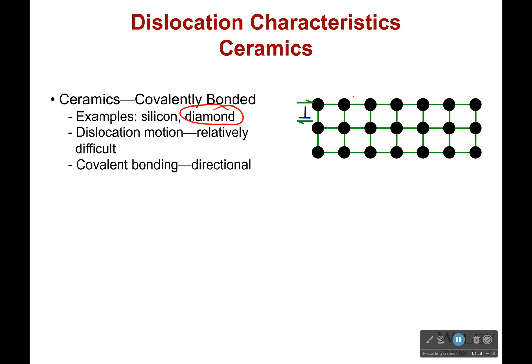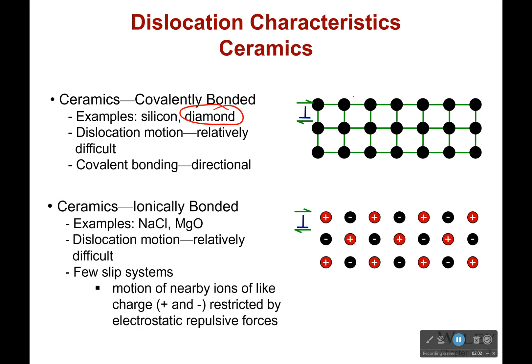That's why diamonds don't have much plastic deformation before failure — they just break, because of those covalent bonds. Now ceramics are also ionically bonded. You might think: ionic bonds are non-directional, just like metal bonds, so why is it difficult? Well, it's difficult because of how they're patterned — it's like a checkerboard. Like charges repel each other, so when I'm trying to move, I'm actually trying to move a negative ion closer to another negative ion, and they don't like that. So it won't move — that's why salt is not very good at deforming. It just cracks. It's very brittle.